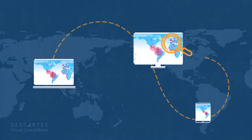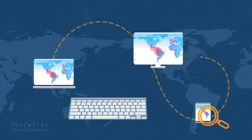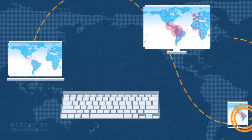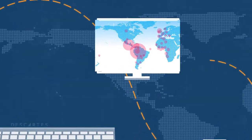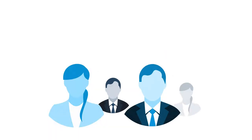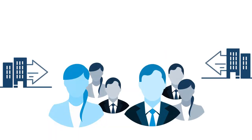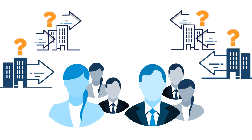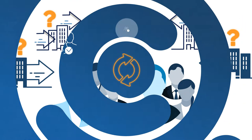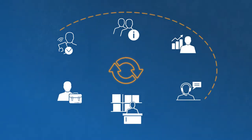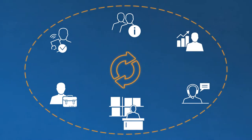Accessible from anywhere, 24-7, our online and integrated applications automatically search hundreds of lists simultaneously. Give your frontline sales team the ability to identify and stop a potential violation dead in its tracks. And across the organization, from procurement to finance and distribution,